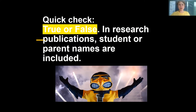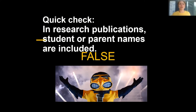Let's rewind to objective two. In research publications, true or false: are student and parents' names included? The correct answer is false. In research publications, student or parents' names are not included. Remember, it's called de-identified data.